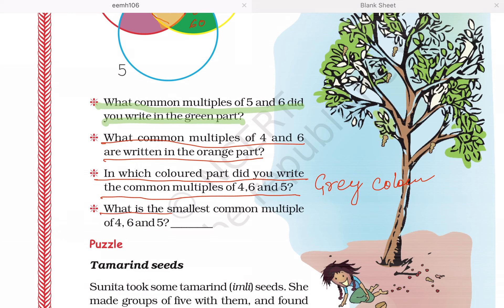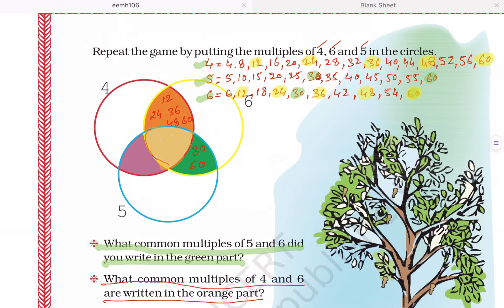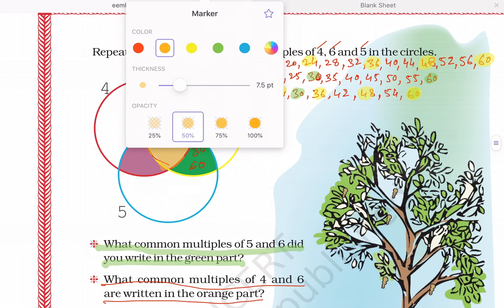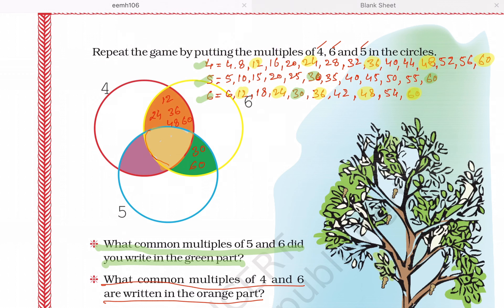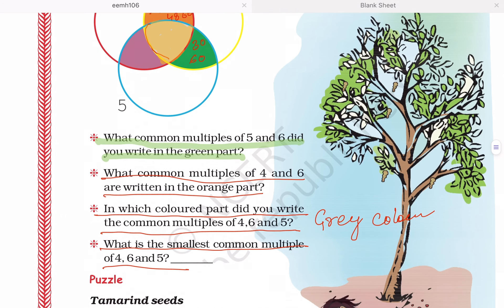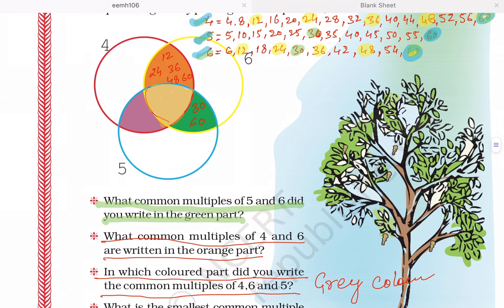And the last question is, what is the smallest common multiple of 4, 6, and 5? You can see the smallest common multiple of these three numbers is 60. You can write the answer 60 in this part.